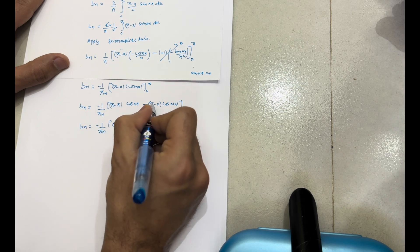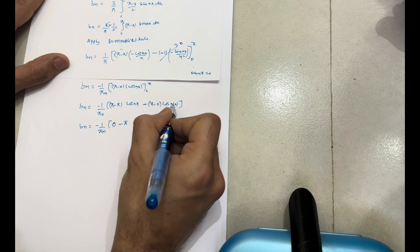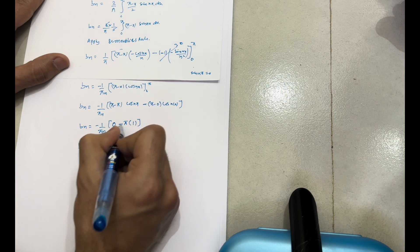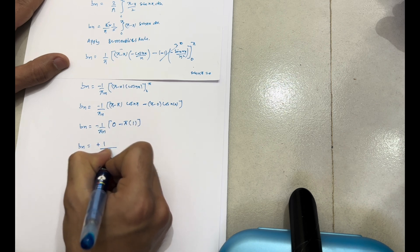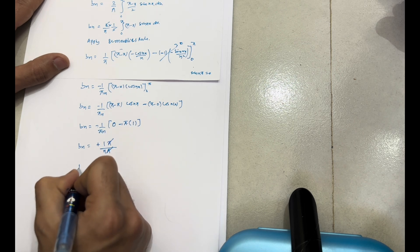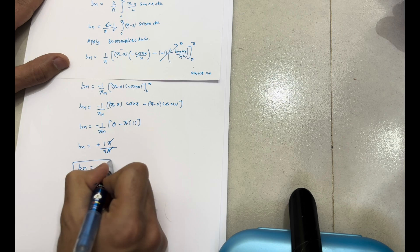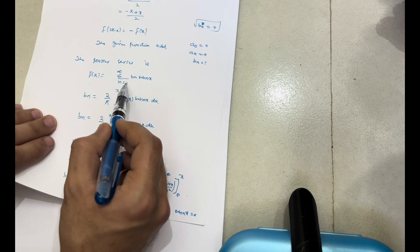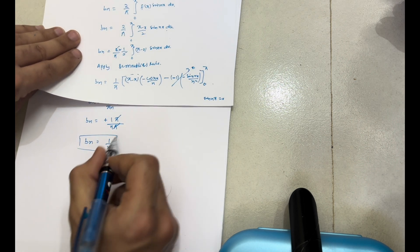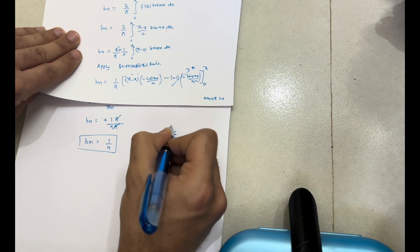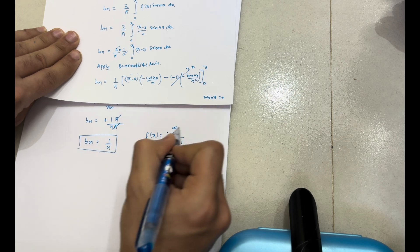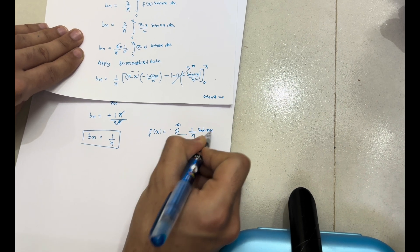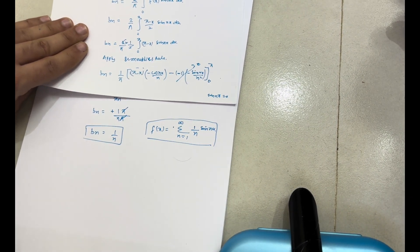So bn = -(1/πn)(−π) = π/(πn). The π cancels, giving bn = 1/n. Now substituting this bn value into the Fourier series: f(x) = Σ (n=1 to ∞) (1/n) sin(nx). This is the required Fourier series for this particular question.